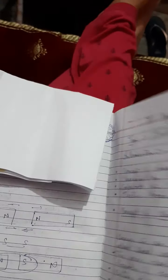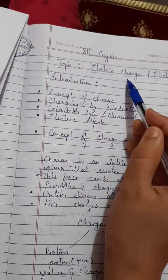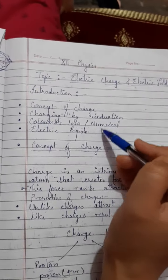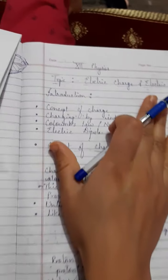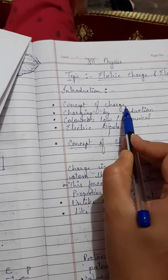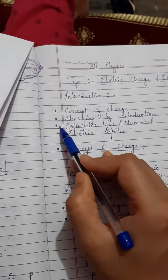Now let's move on to our first chapter, which is Electric Charge and Electric Field. Today we will discuss several topics: first is the concept of charge, second is charging by induction, third is Coulomb's law, fourth is electric dipole, etc.